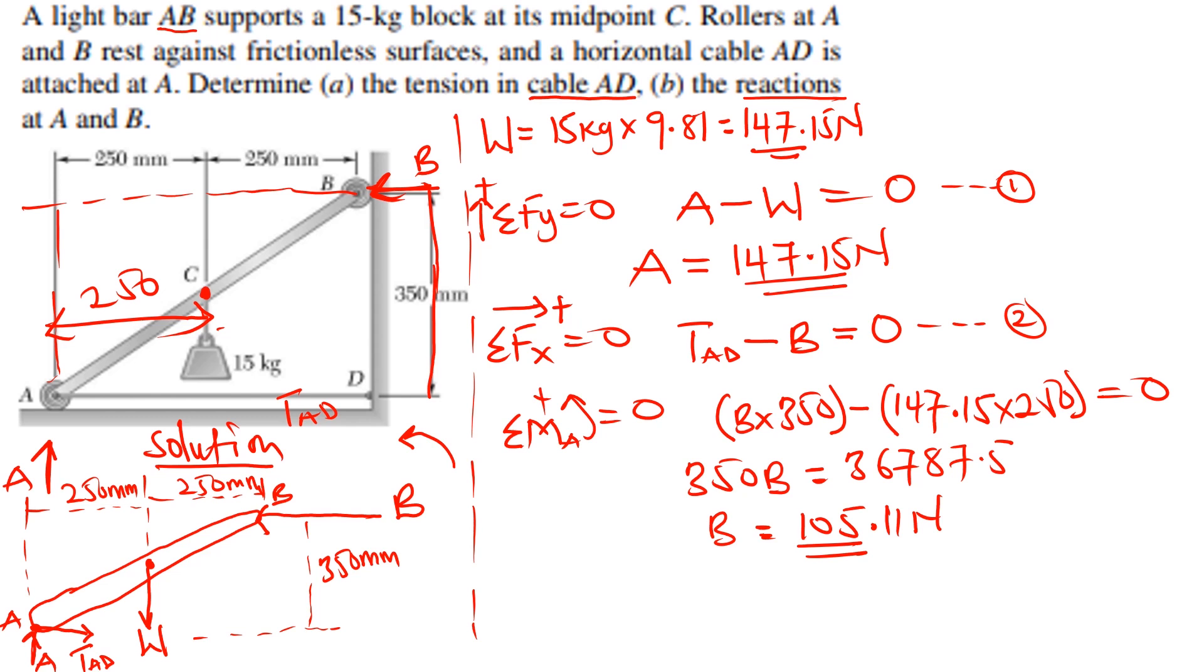From equation 2, we can also find the tension. From equation 2, we can see that tension TAD is going to be equal to B. Which means that tension in AD is going to be 105.11 newtons. So the tension is balancing the reaction.